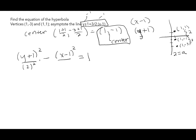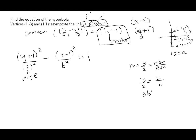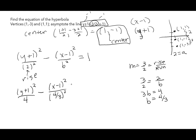I need to find b using the asymptote slope of 3/2. The slope of a hyperbola asymptote is a/b, so 3/2 = 2/b. Cross-multiplying: 3b = 4, so b = 4/3. Don't just assume 3/2 equals a/b directly — you have to work it out.